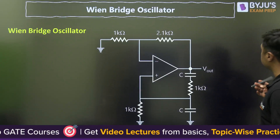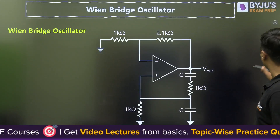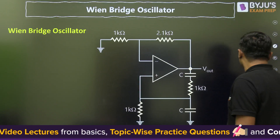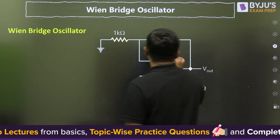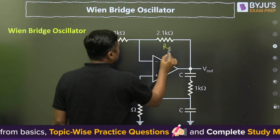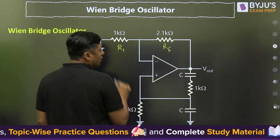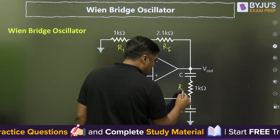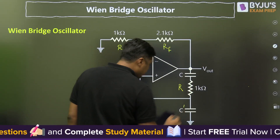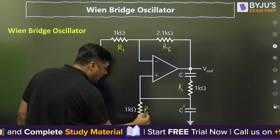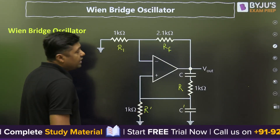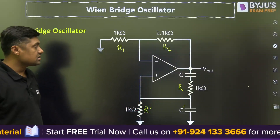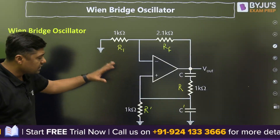Here we have the Wien Bridge Oscillator circuit with different resistors and capacitors. The standard notation is: RF for this resistor, R1 for this resistor, C for this capacitor, R for this resistor, C-dash for this capacitor, and R-dash for this resistor. In this question, we are given some values to solve numericals.